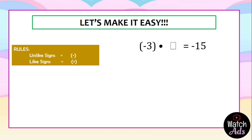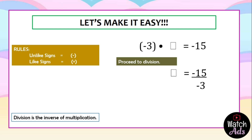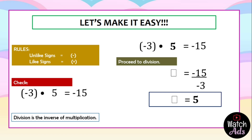For this example, there is a missing factor — the multiplier. Remember, division is the inverse of multiplication. To find the missing multiplier, we proceed to division: divide the product by the known factor. The product is negative 15 divided by negative 3. Since they are like signs, the answer is positive. 15 divided by 3 is 5, so the final answer is 5. We check: negative 3 multiplied by 5 — they are unlike signs, so the answer is negative 15. Correct.